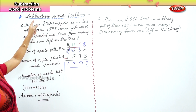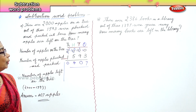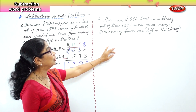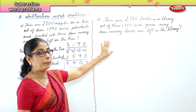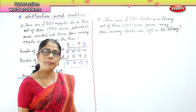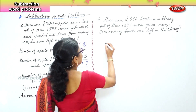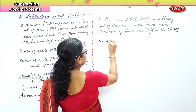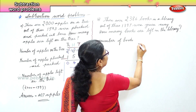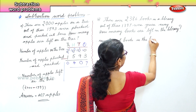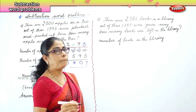Now we know how to do subtraction word problems with four digit numbers. First frame the statements, then draw the column and do the sum. In the second word problem: there were 2,386 books in a library. Out of these, 1,397 were given away. How many books are left in the library? We write the statement: number of books in the library, and number of books given away.